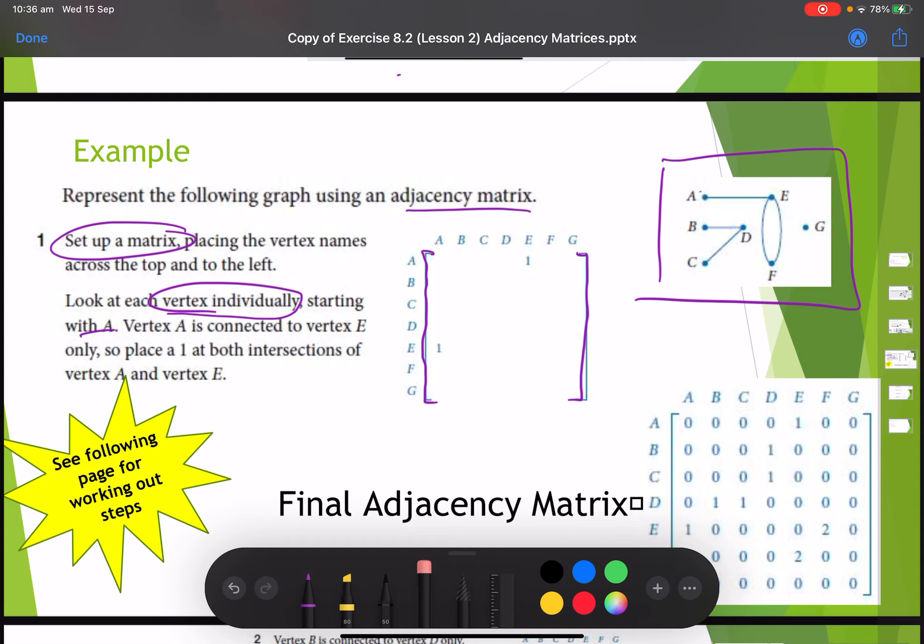So a to a is zero. A to b, there is no connection between a to b. I've just drawn one but that didn't actually exist, so that's a zero. A to c, again there's nothing joining a and c together, so that's a zero. A to d, there is nothing joining a and d together, so that's a zero. A to e, we do have one connection so that's a one. A to f, there's nothing joining a to f directly. It's to two degrees but not actually, so zero. And a to g, there is no connection as well.